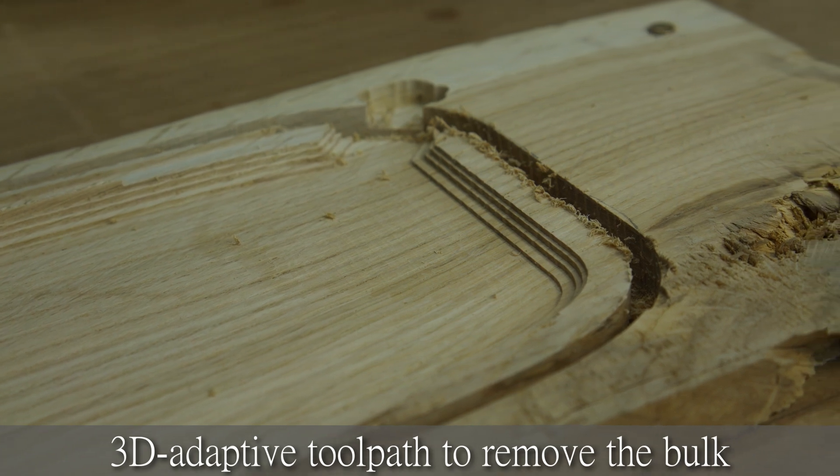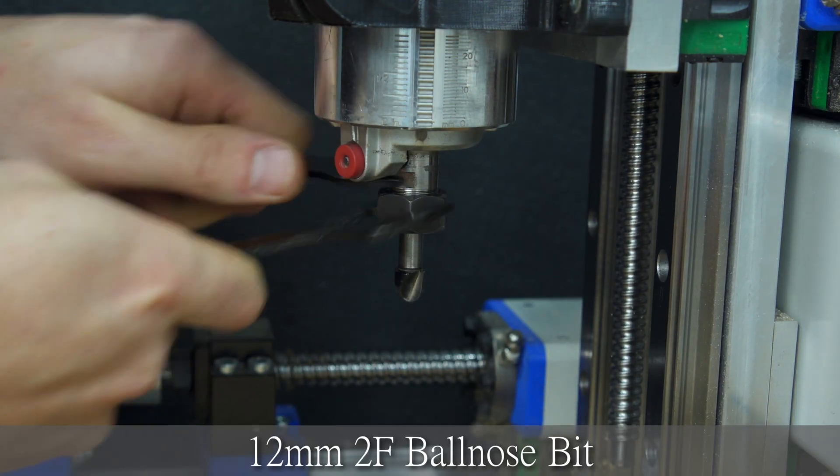With the coarse 3D adaptive toolpath in the inside corner, a ball nose bit has less material to clear.